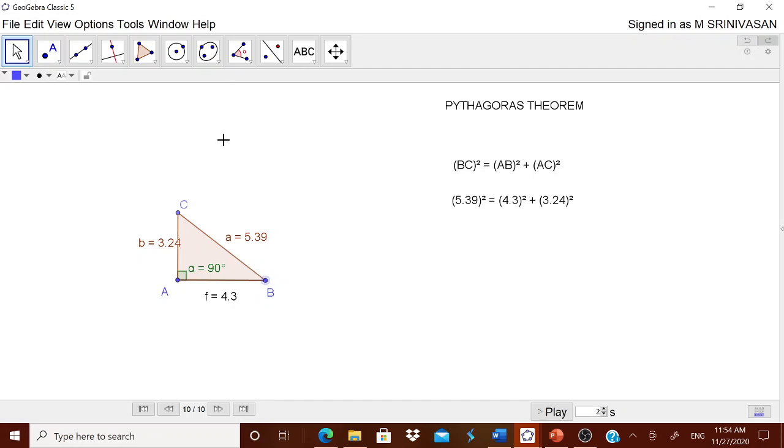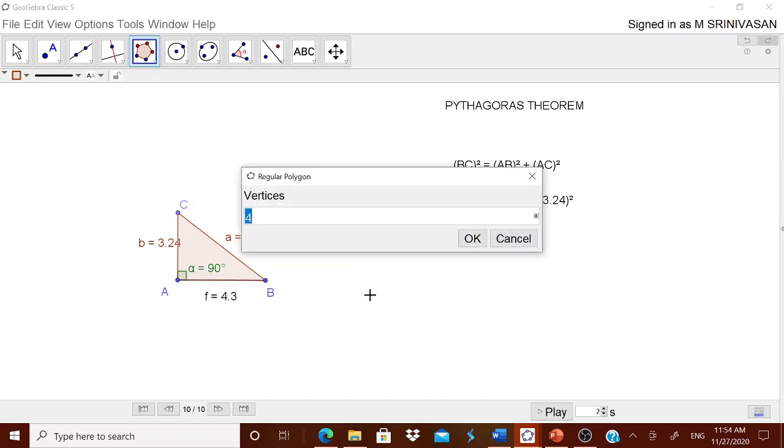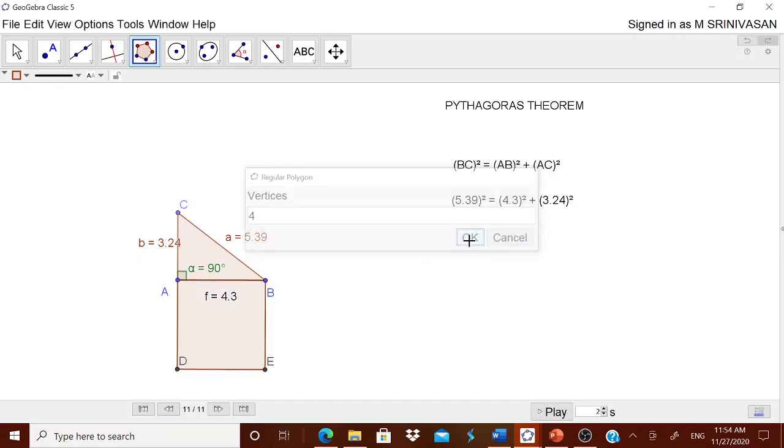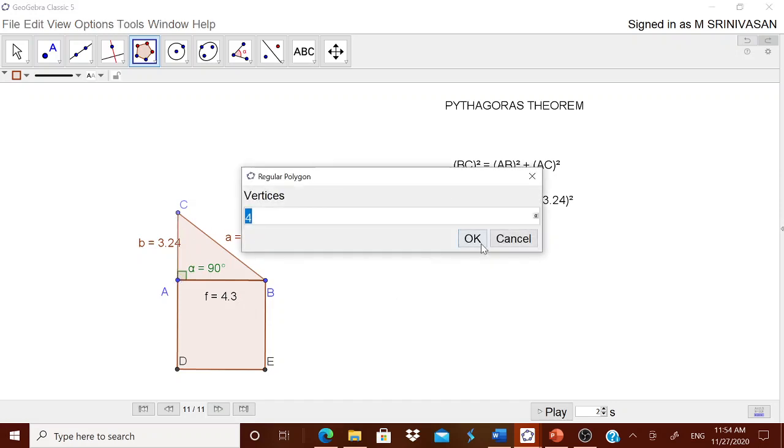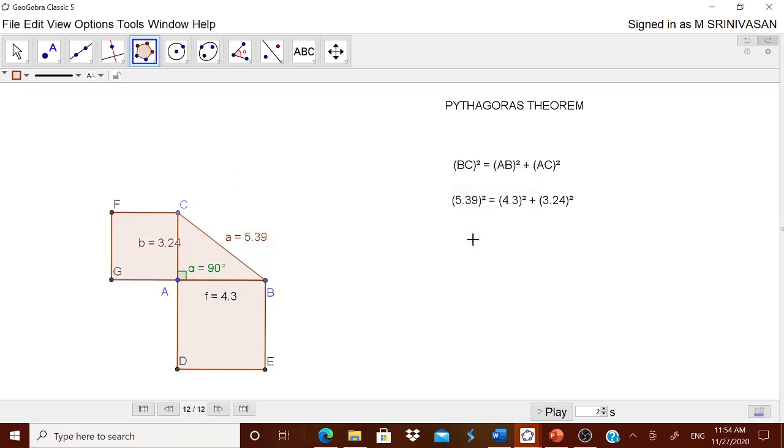For that we need a square. It is a regular polygon. Therefore go to this polygon, go to this regular polygon. Do it in clockwise. For example, you touch this, touch this A. It will ask immediately what type of regular polygon you want. I want a square. Just simply click OK. You got it.